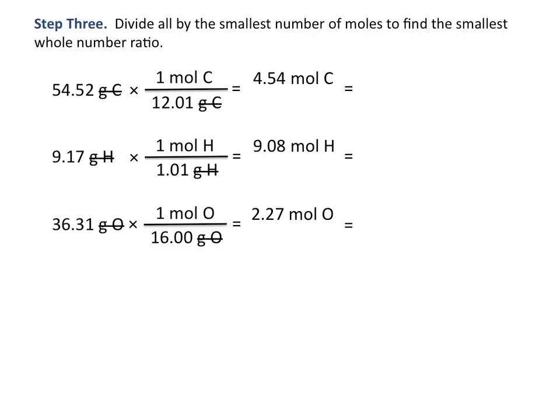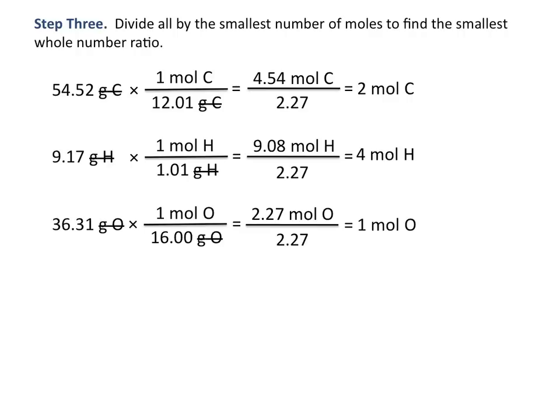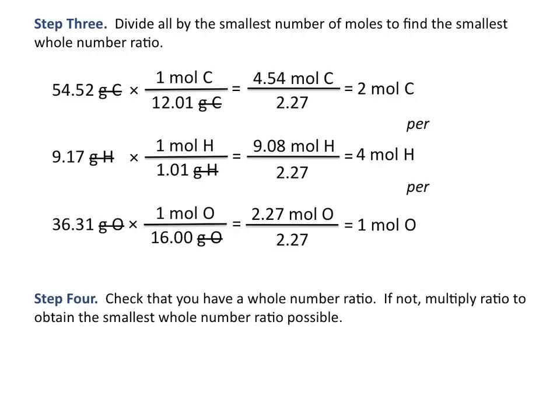In this example, 2.27 moles is the smallest value, so we divide all values by 2.27. That gives us a whole number ratio of 2 moles of carbon per 4 moles of hydrogen per 1 mole of oxygen. The last step is to check that you have a whole number ratio.